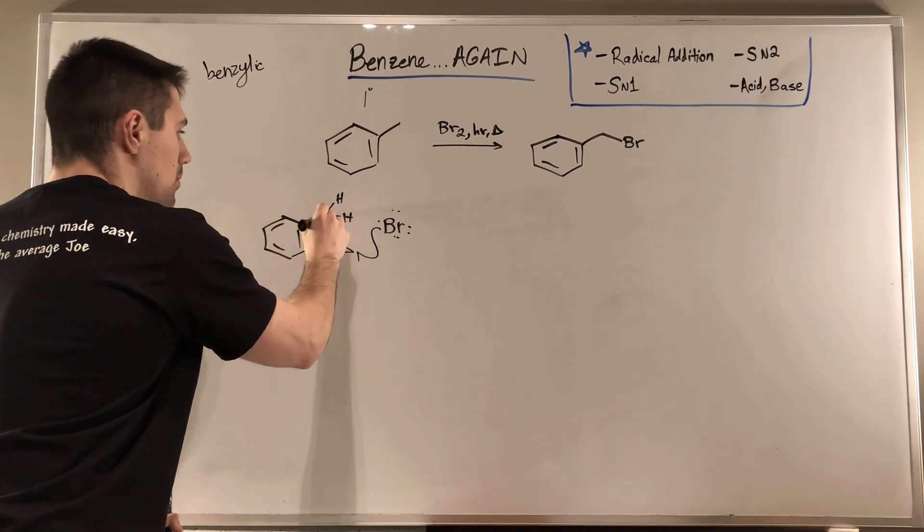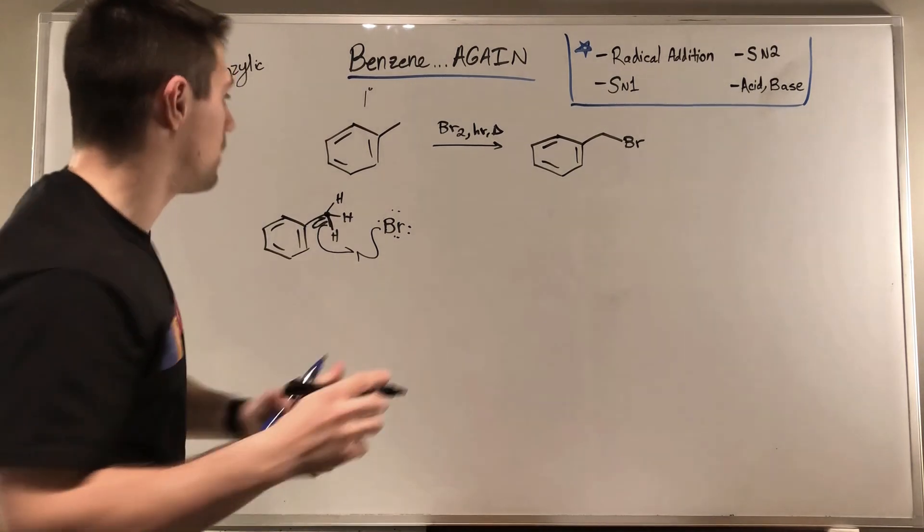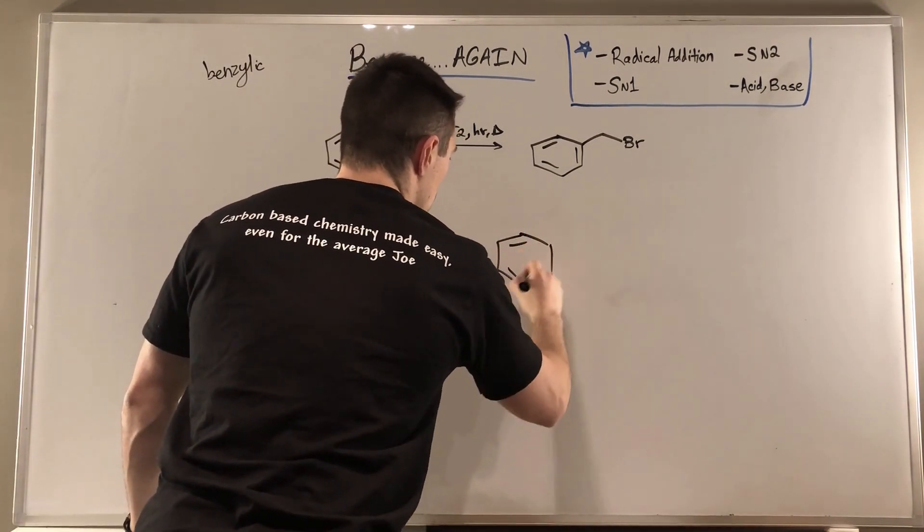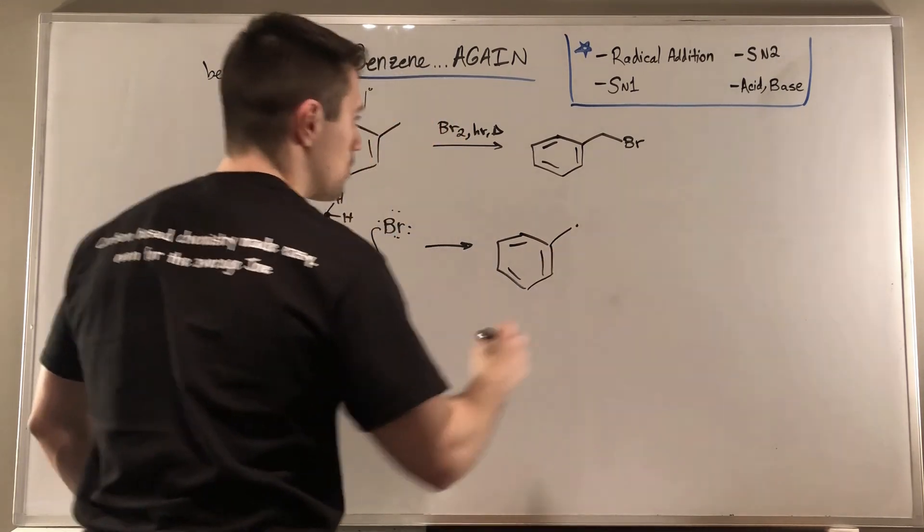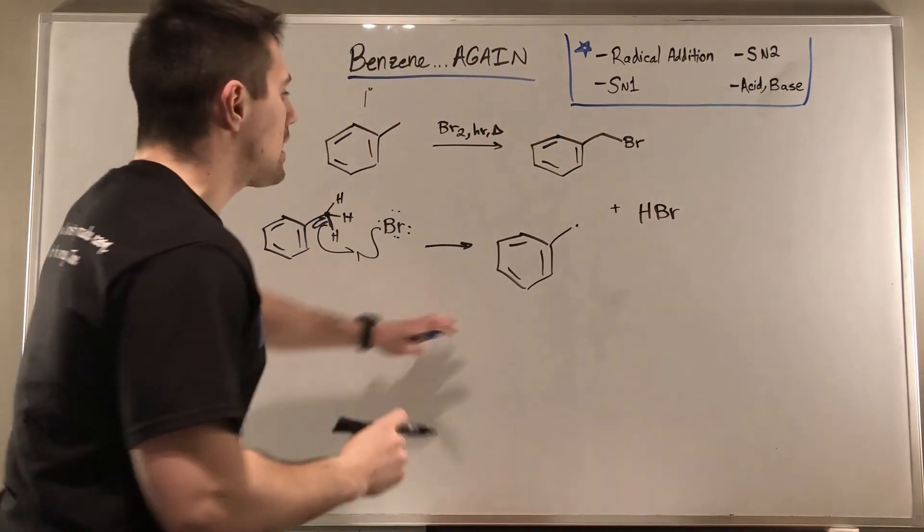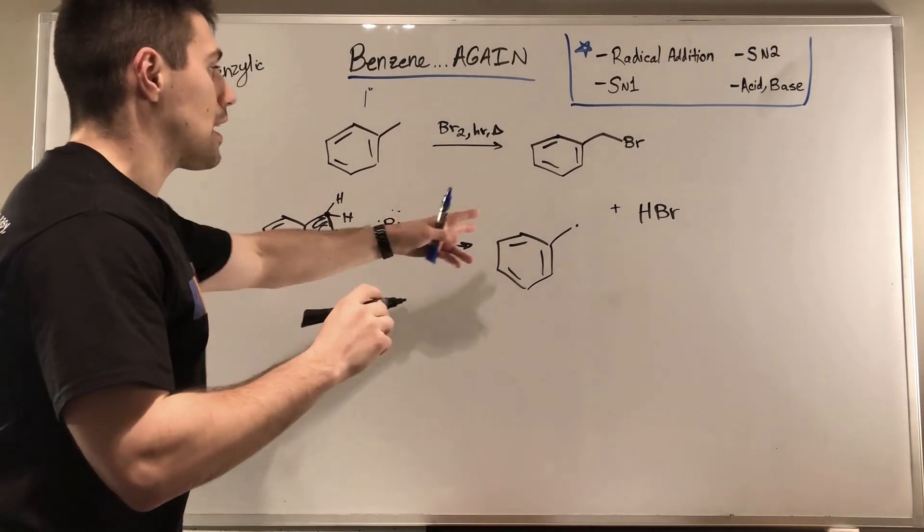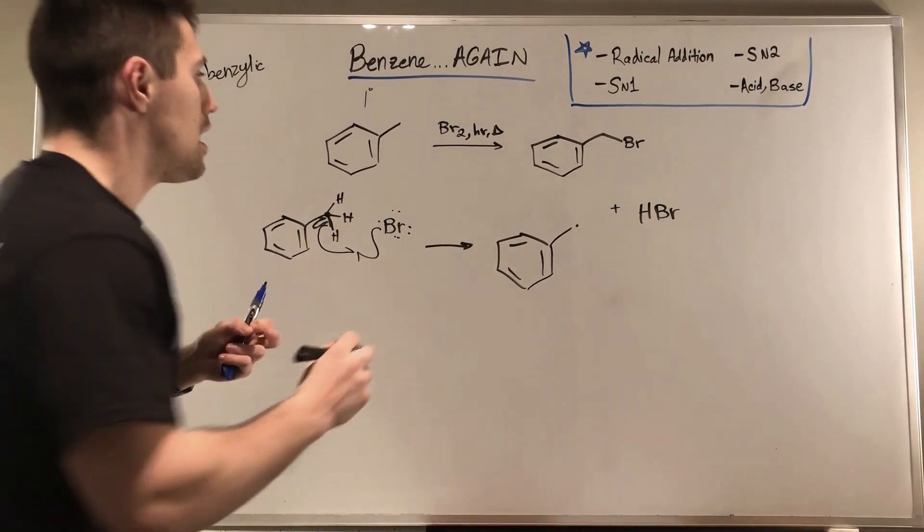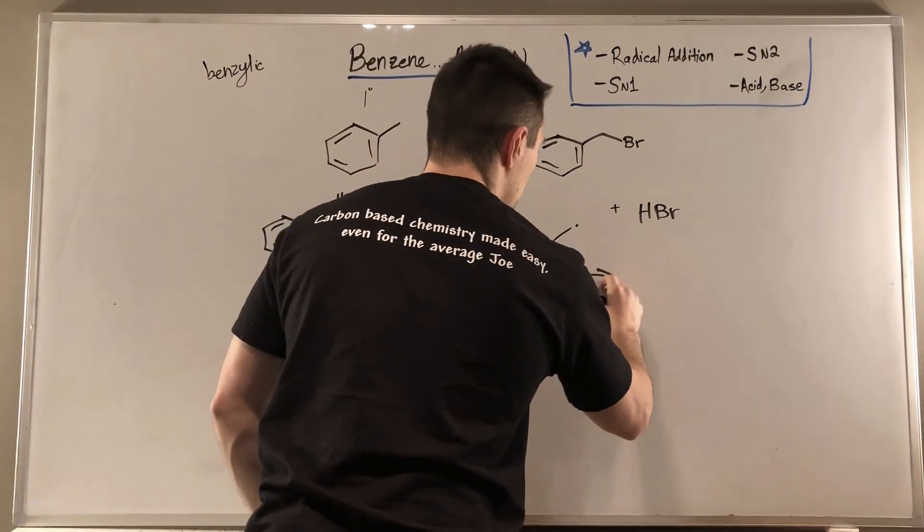And at this point, we make this radical and HBr, but we don't care about the HBr. We care about this. Now, it looks like a primary radical, but it's so much more than that. If we go ahead and draw a double-headed arrow for resonance, I'm going to draw this in blue.